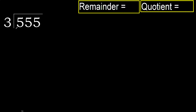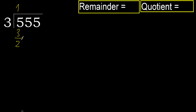555 divided by 3. 5 is not less — with 5, 3 multiplied by which number is nearest to 5 but not greater? 3 multiplied by 2 is 6, which is greater. 3 multiplied by 1 is 3, which is not greater. 5 minus 3 equals 2.